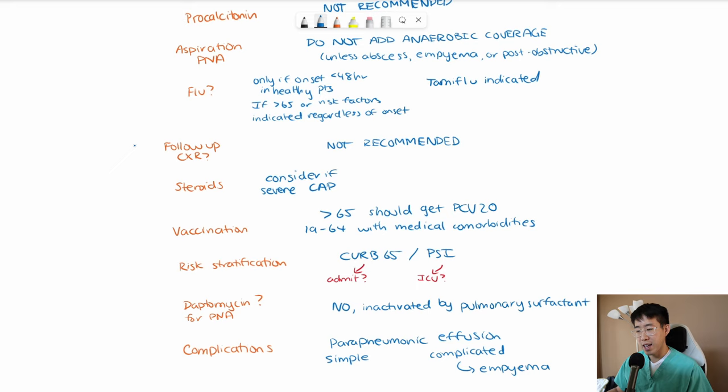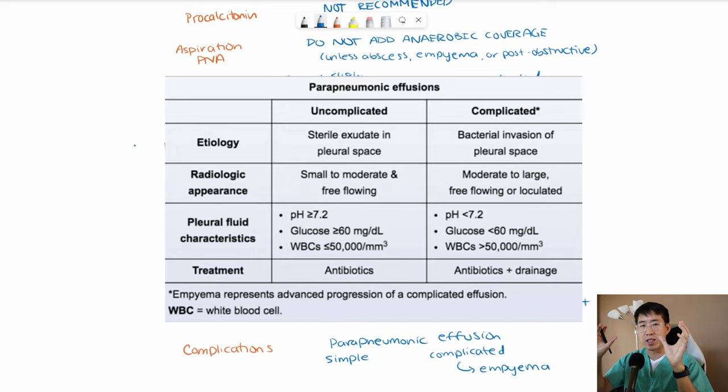This is one of the most common board questions they'll give you because they can give you this nice chart and show you what the pleural fluid looks like. And then they ask you, what's the next step in management for this patient? So for a simple parapneumonic effusion, you can just do antibiotics and let it self-resolve basically. But any complicated parapneumonic effusion or empyema is going to need antibiotics plus drainage.